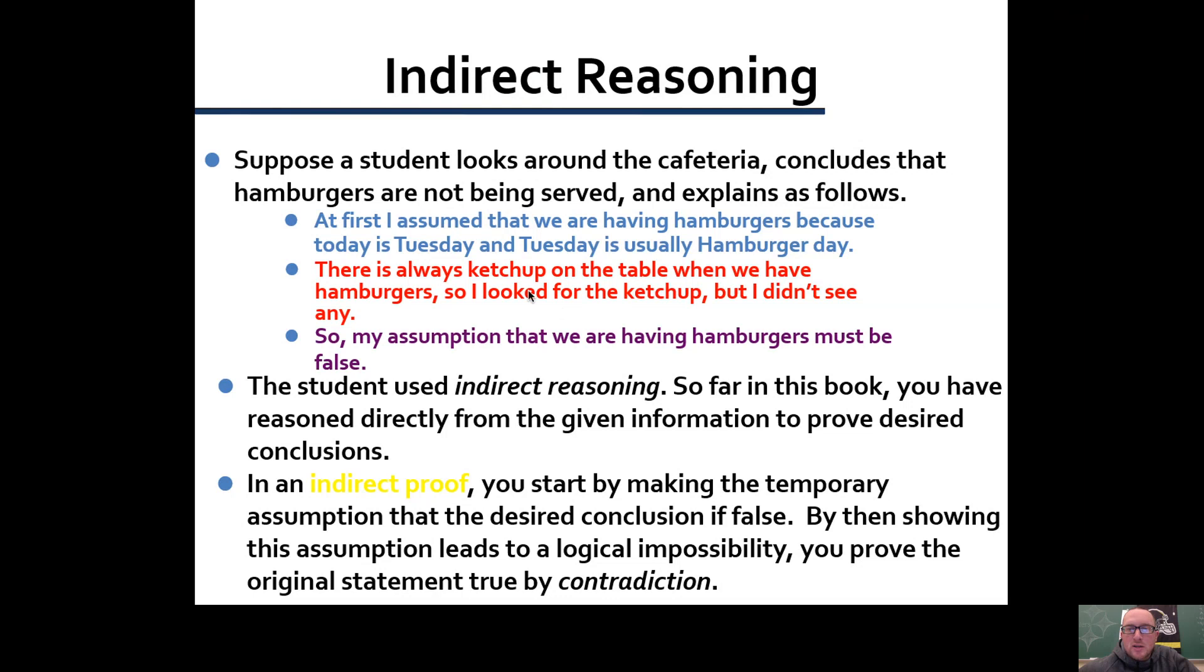So I looked for the ketchup but I didn't see any, so my assumption that we are having hamburgers must be false. The student used indirect reasoning. So far in this text we've reasoned directly from the given information to prove the desired conclusions. In an indirect proof you start by making the temporary assumption that your desired conclusion is false.